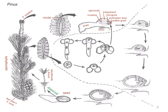The ovule consists of an integument, and inside of the integument is the nucellus — that's nutritive tissue. And inside of the nucellus is a sporophyte. The ovule has a hole at one end called the micropyle. The nucellus secretes a fluid through the micropyle called the pollination drop, which picks up pollen grains. And then as it shrinks, it pulls the pollen grains in through the micropyle.